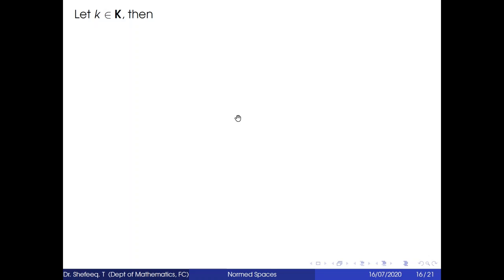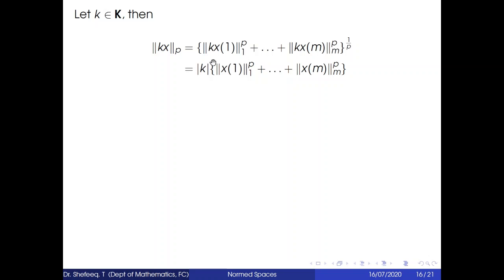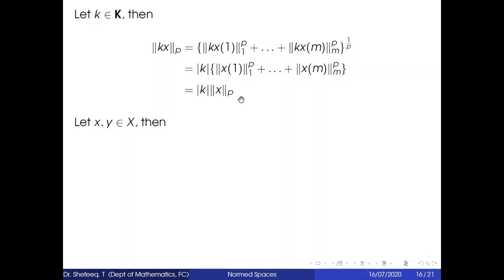For scalar multiplication, let k belong to K. Then ‖kx‖_p by definition equals (‖kx_1‖_1^p + … + ‖kx_M‖_M^p)^{1/p}. Taking k outside, since each ‖·‖_j satisfies the scalar property, we get |k| · (‖x_1‖_1^p + … + ‖x_M‖_M^p)^{1/p} = |k| · ‖x‖_p.